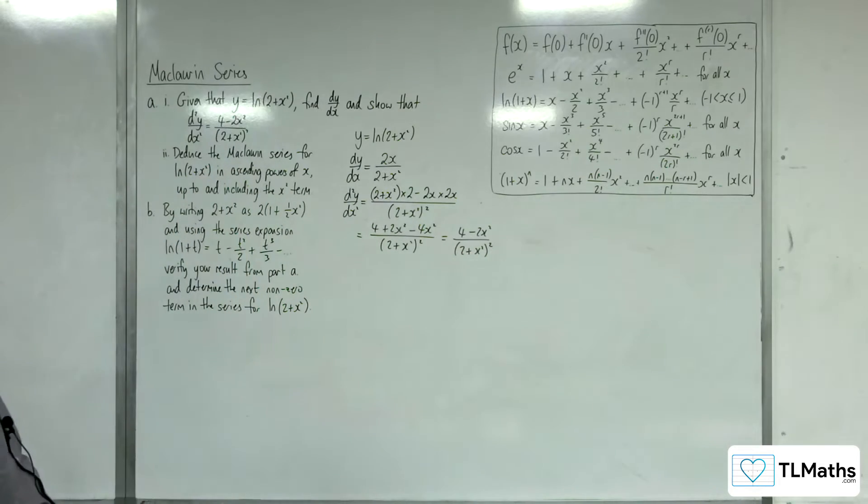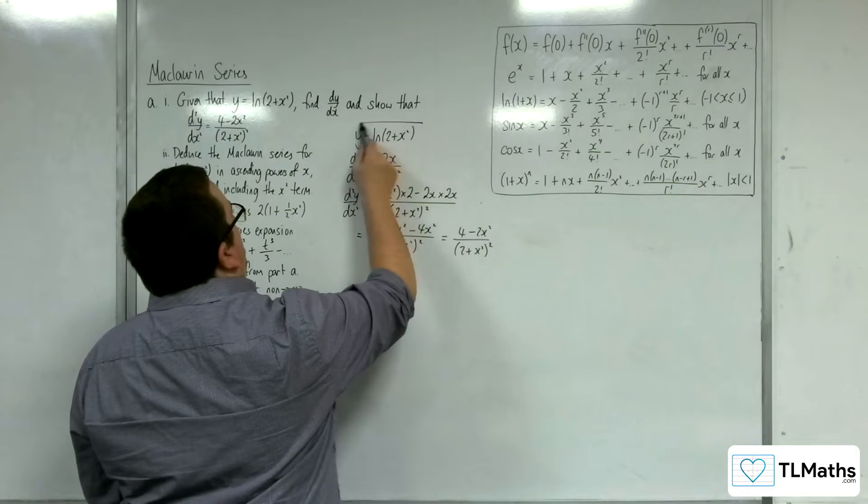And so we're left with 4 take away 2x squared over 2 plus x squared squared, as required. Okay, so that is our part 1.